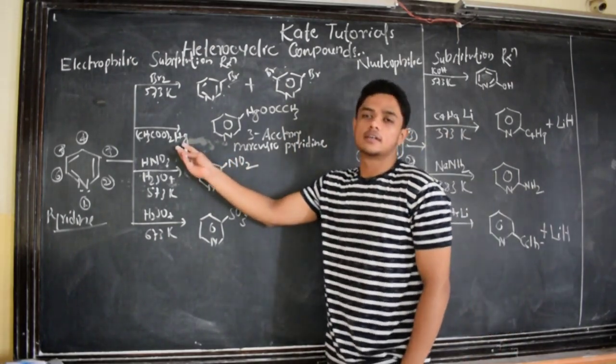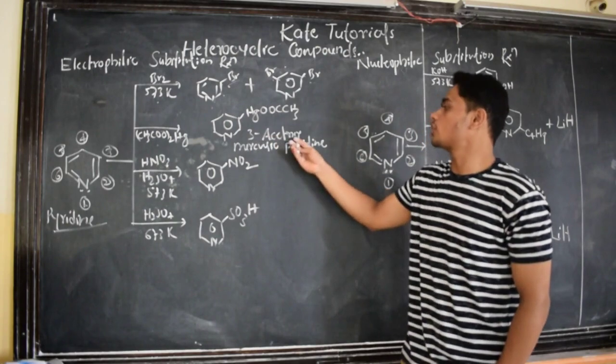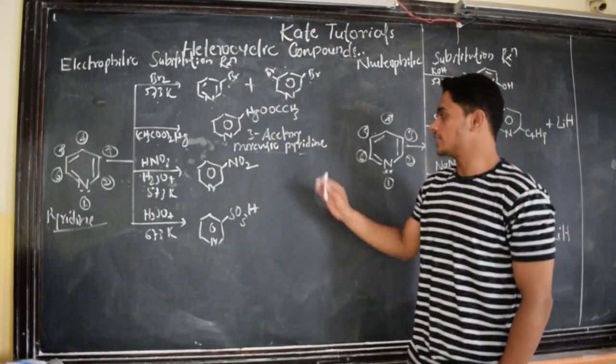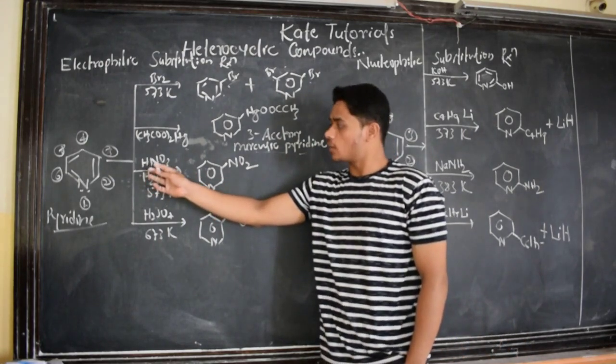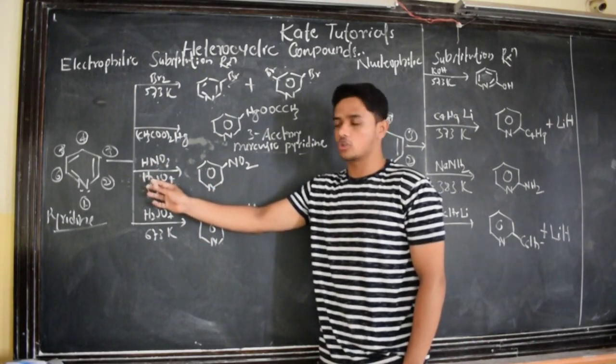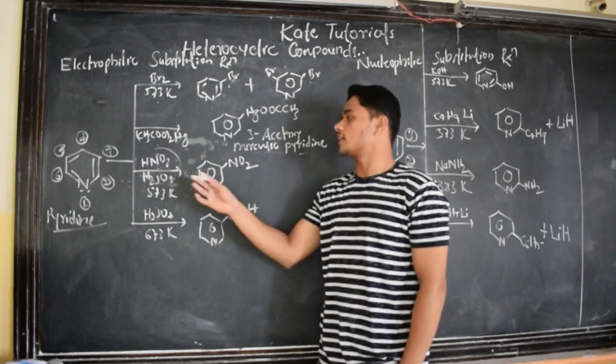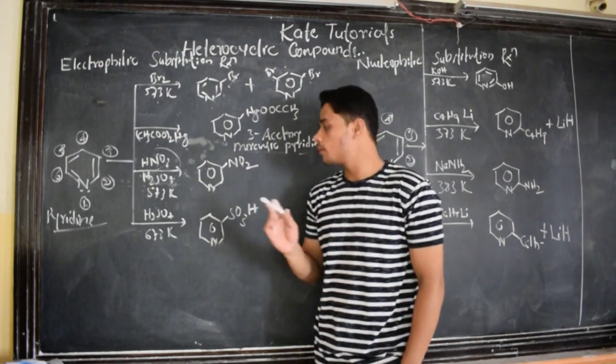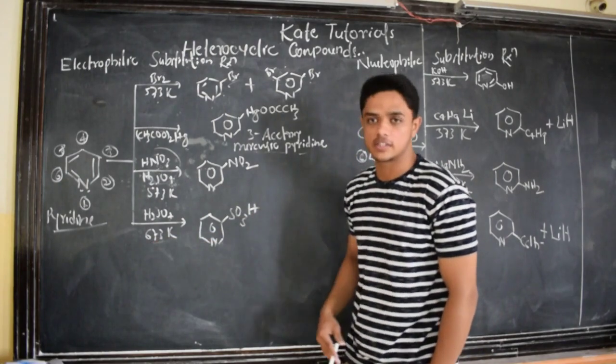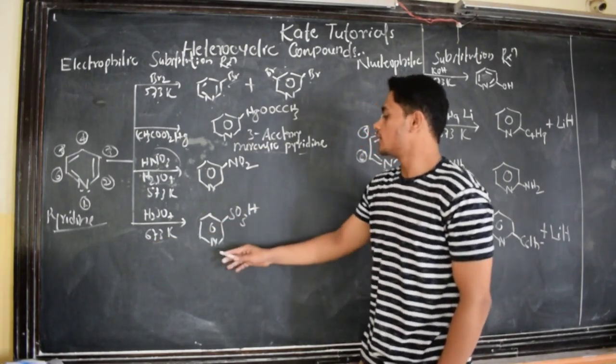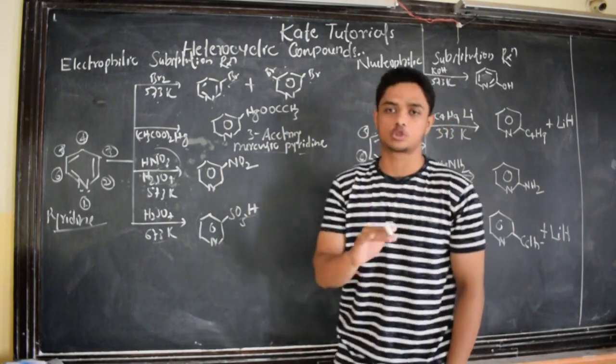The next, this is about mercurization. CH3CO2HG when treated with pyridine we are going to get 3-acetoxy mercuric pyridine. This is mercurization. Now we have nitration. We take nitrating mixture, that is 1 molecule of HNO3, 3 molecule of H2SO4 at 573 Kelvin. This is nitrating mixture. When treated with pyridine we are going to get 3-nitropyridine. And then comes cold H2SO4, concentrated H2SO4 at 573 Kelvin. When we react it we are going to get pyridine 3-sulfonic acid. This is the electrophilic substitution reaction.